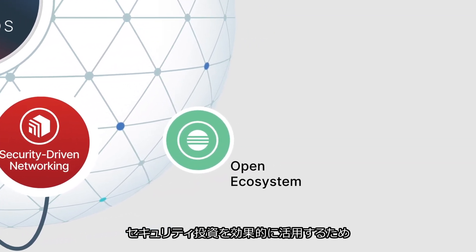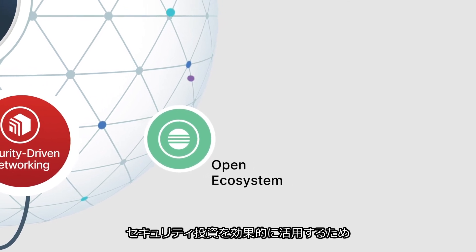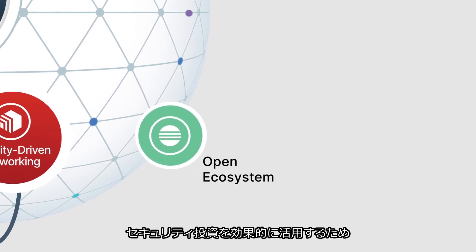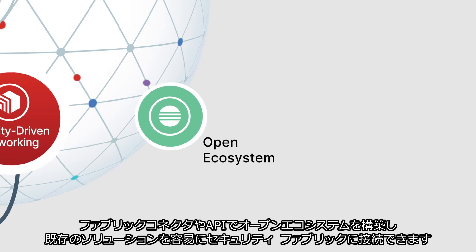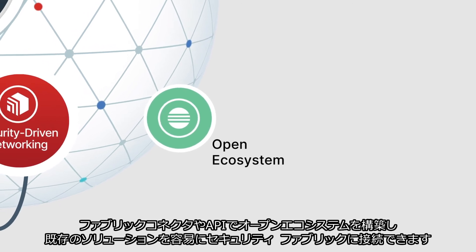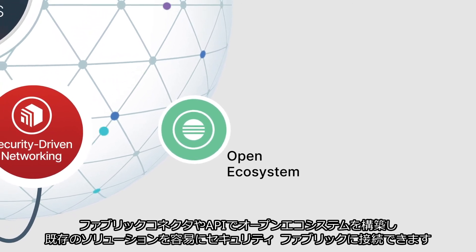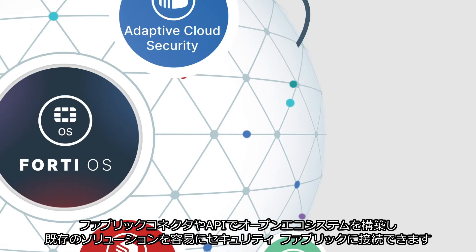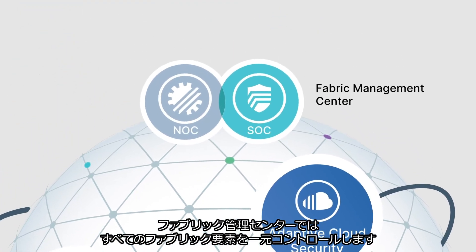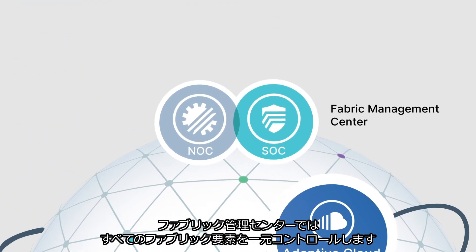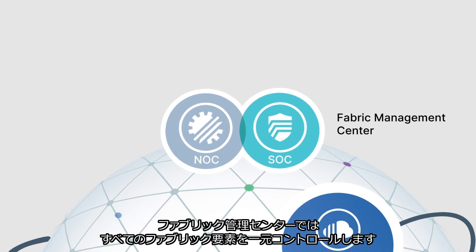To help organizations more effectively leverage their existing security investments, fabric connectors and APIs create an open ecosystem so existing solutions can be easily connected into the security fabric. A single fabric management center provides centralized control of every fabric element.